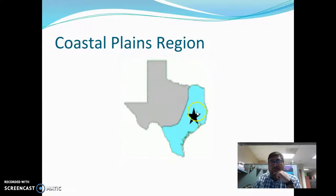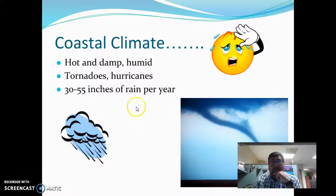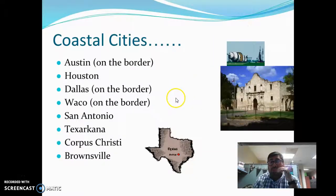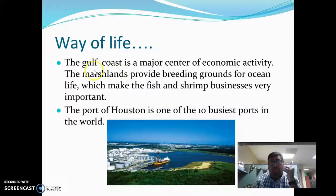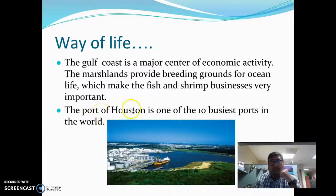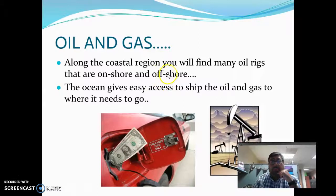We're talking about the Coastal Plains region. The climate is hot and damp — it's humid. There are tornadoes and hurricanes, and you get between 30 to 55 inches of rain per year, so there's a lot of rain. Some cities in the Coastal Plains include Austin, Houston, Dallas, Waco, San Antonio, Texarkana, Corpus Christi, and Brownsville. The Gulf Coast is a major center of economic activity. Marshlands provide breeding grounds for ocean life, making fish and shrimp businesses very important. The Port of Houston is one of the 10 busiest ports in the world. There's a lot of oil and gas — many oil rigs are onshore and offshore.